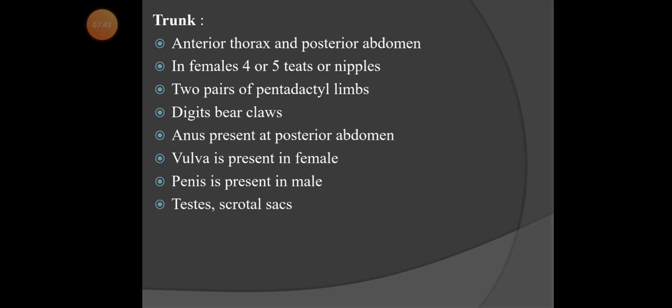The trunk is divided into two parts: the anterior thorax, which is the chest region, and the posterior abdomen, which is the stomach region. In females, four to five teats or nipples are present in the thorax region for giving milk. The rabbit has two pairs of pentadactyl limbs — front legs and back legs — which are side organs of the body.